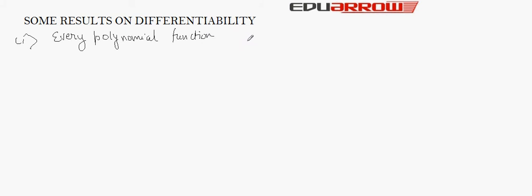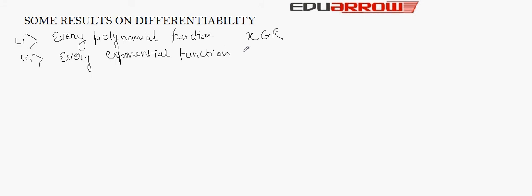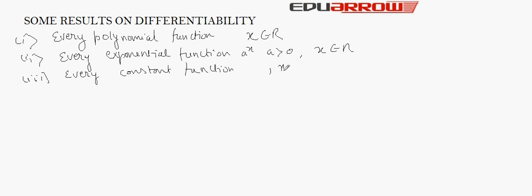Now, we will discuss some standard results on differentiability. The first result says that every polynomial function is differentiable at each x belonging to R. The second result says that every exponential function, provided that the base a is greater than 0, is differentiable at x belonging to R. The third result says that every constant function is differentiable at x belonging to R. The fourth result says that the logarithm function is differentiable at each x belonging to R.